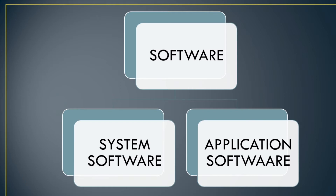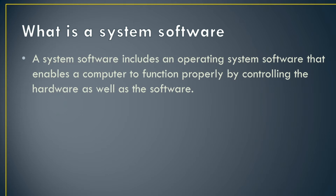What is a system software? System software includes the operating system software that enables the computer to function properly by controlling the hardware as well as the software. The system software plays the role of an intermediator between the hardware and the software — it tells how the hardware should work and becomes an interface between the hardware and the software.